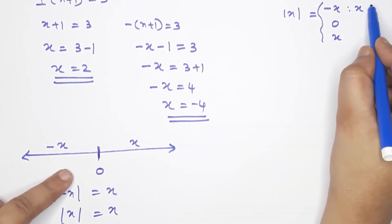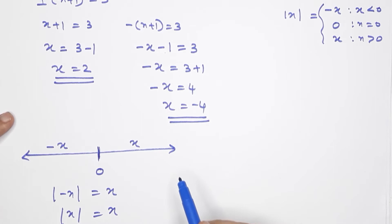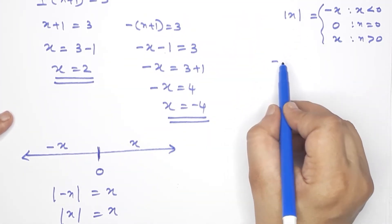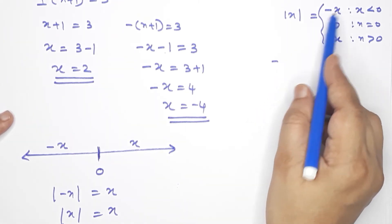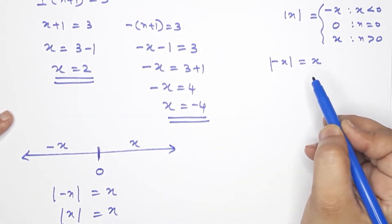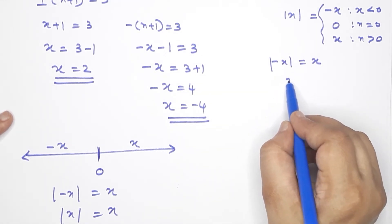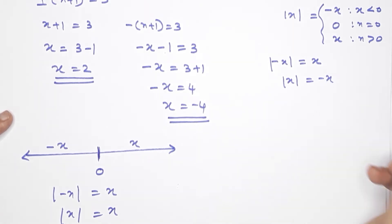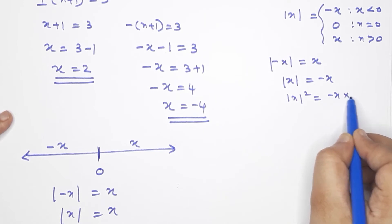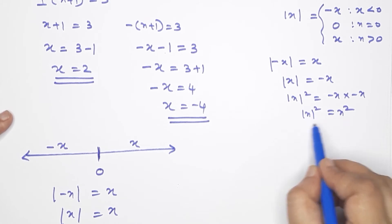We have three conditions: x equals 0, x greater than 0, and x less than 0. For negative x: modulus of x equals minus x, and the square root of x squared equals the square root of minus x times minus x, which equals the square root of x squared. So modulus x equals square root of x squared.